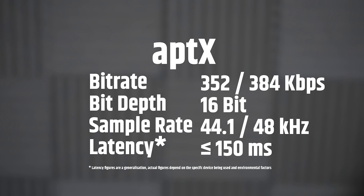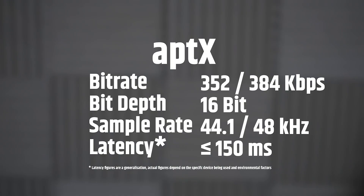Next up, we have AptX, which is Qualcomm's Bluetooth audio codec. Unlike AAC and MP3, AptX does not use psychoacoustic modelling. AptX operates on a fixed data rate of 352 kbps at 44.1 kHz sample rates and 384 kbps at 48 kHz sample rates, with a 16-bit depth. Because it always plays at maximum quality, it is preferred over SBC. This is the preferred audio codec for Android devices, but unfortunately AptX is not available on iOS. Latency can be expected to be up to 150 milliseconds.